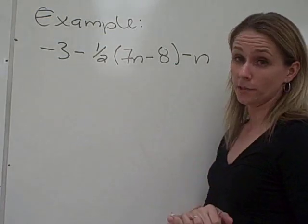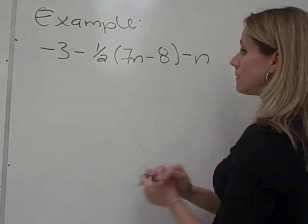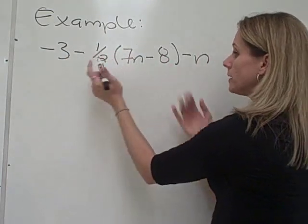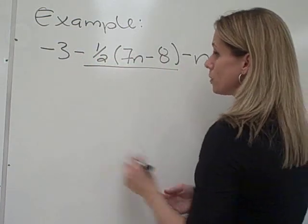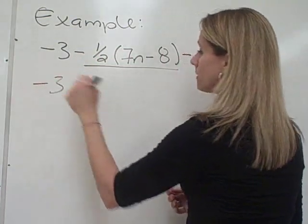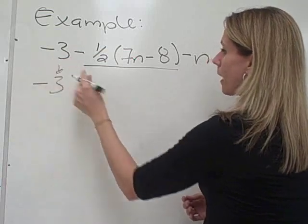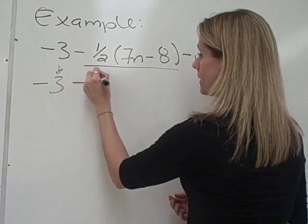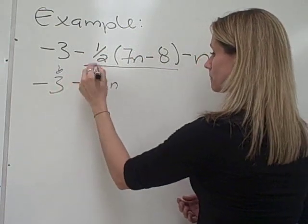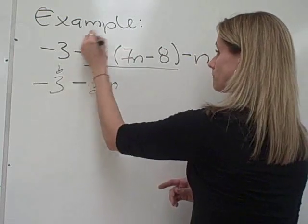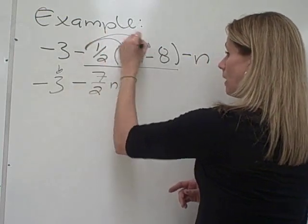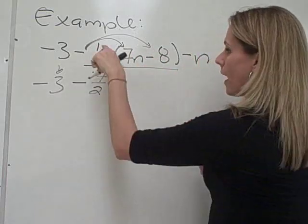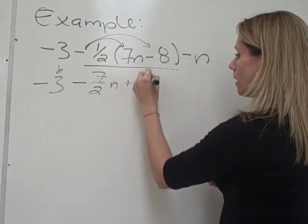Our next example is also going to use that distributive property. You can see that we have something in the front of it and something in the back of it. But we can't really combine anything until we deal with this piece in the middle. So what I'm going to do is use that distributive property to say that I still have my minus 3. I'm just going to bring that down. But then I need to do negative 1 half times 7n, and that's going to give me a minus 7 halves n. Now, I also need to do, after that, a negative 1 half times a negative 8. And a negative times a negative, we know is a positive. And 1 half times 8 is 4, so we get this.